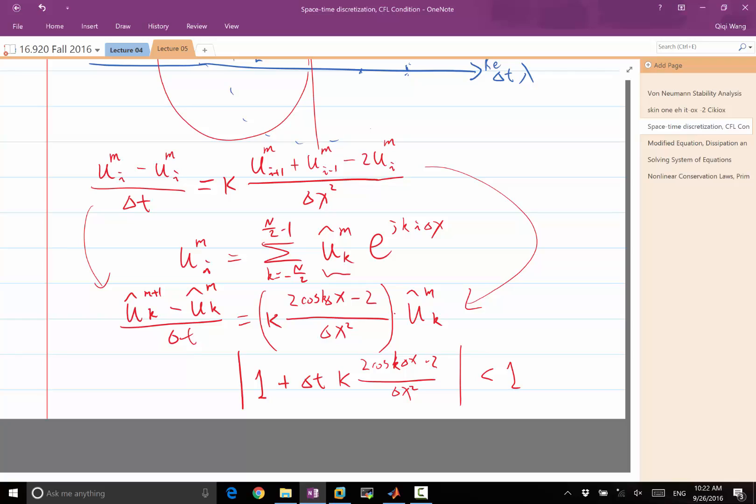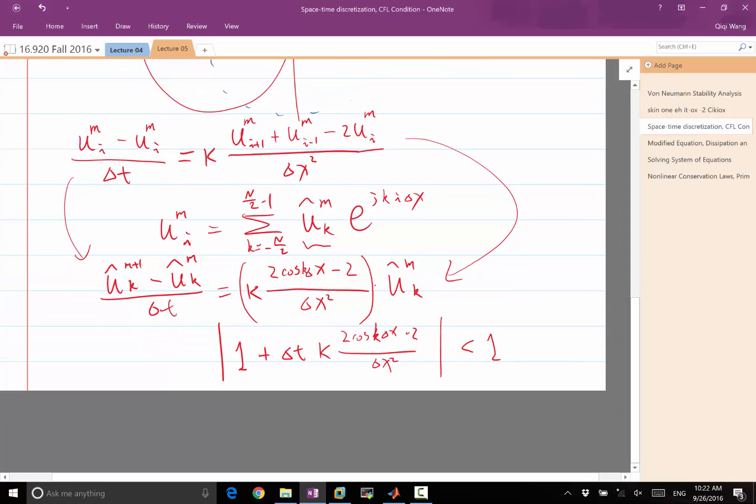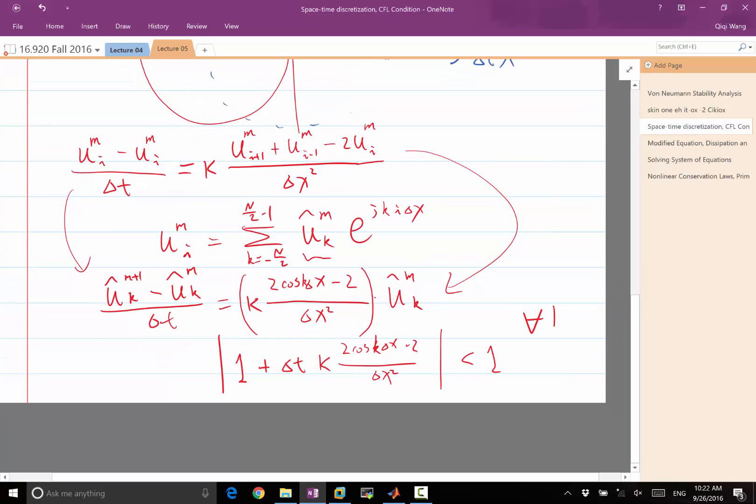That's a good point, choose the worst case k. In other words, this condition has to be valid for all k that goes from minus n over 2 to n over 2 minus 1.